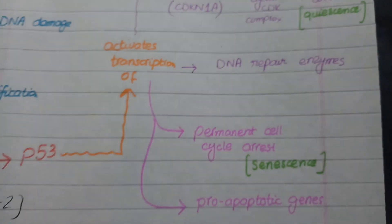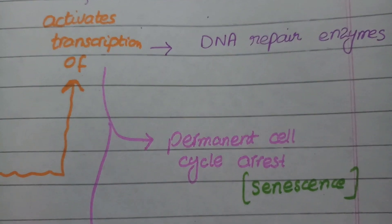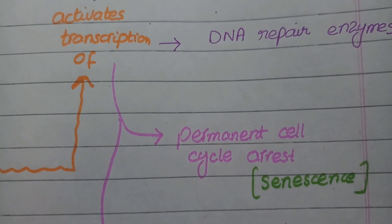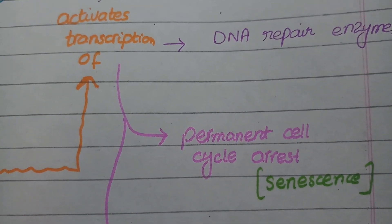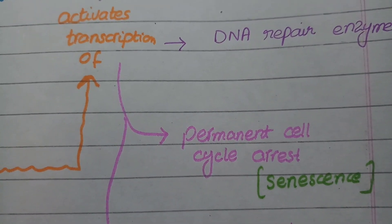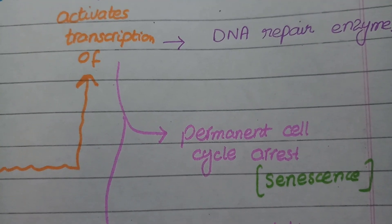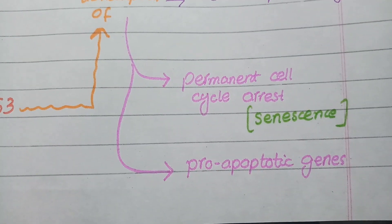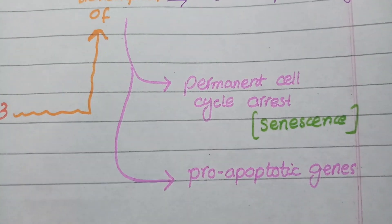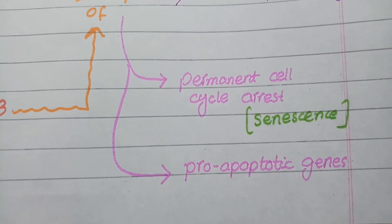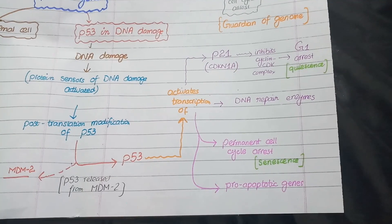Thirdly, when DNA damage is not repaired even by the first strategy, p53 increases the transcription of several genes that permanently inhibit the cell cycle. And finally, p53 causes transcription of pro-apoptotic proteins that signal the cell to die. This is the pathway by which p53 performs its function.